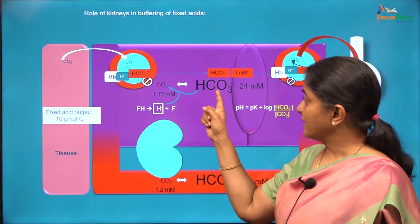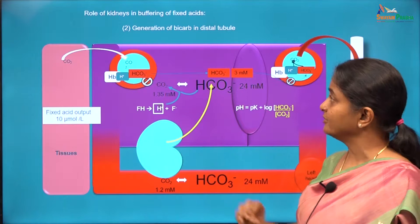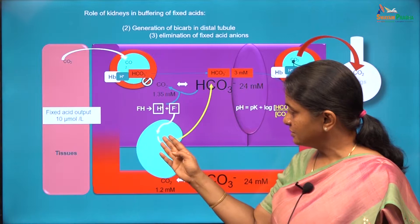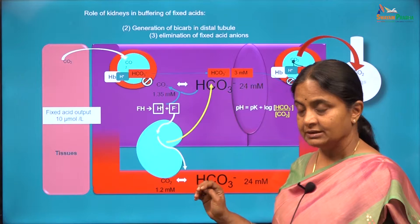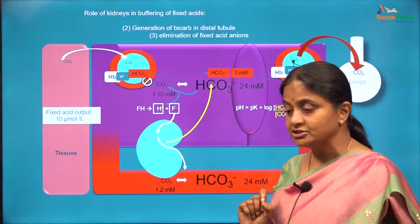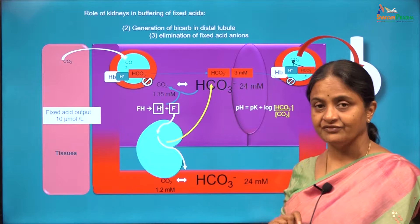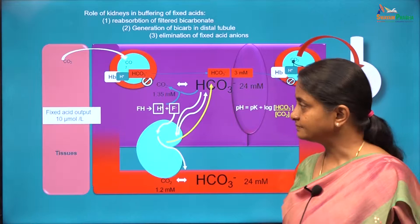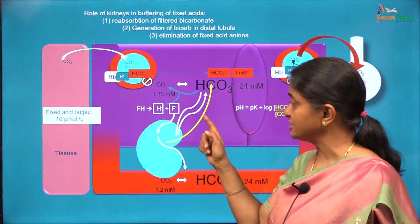The bicarbonate for buffering of fixed acids is provided from the distal tubules of the kidney, a phenomenon called generation of bicarbonate in the distal tubule. In addition, the kidneys are also concerned with filtration and therefore elimination of the fixed acid anions. The third role of the kidney in maintaining plasma bicarbonate levels is reabsorption of filtered bicarbonate.